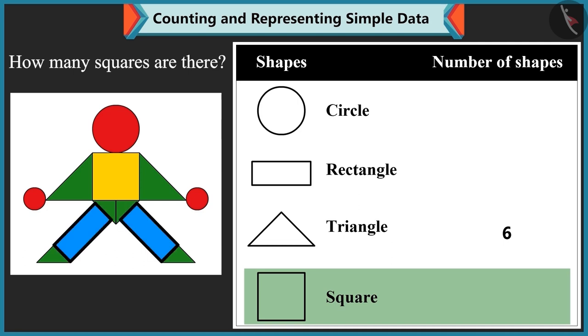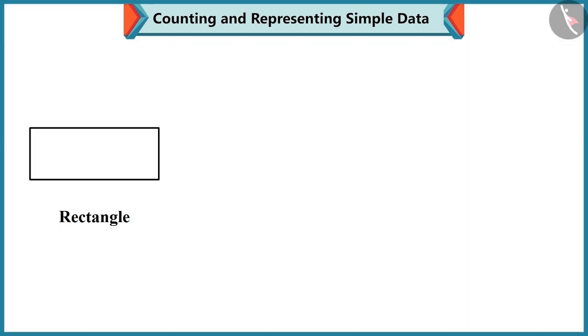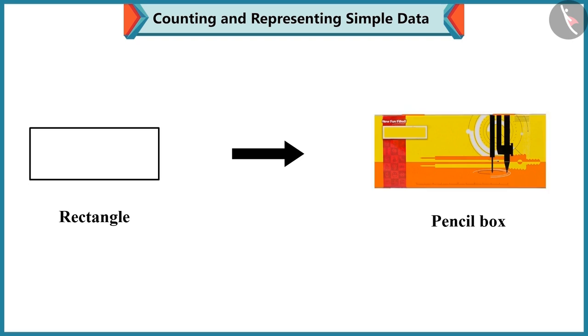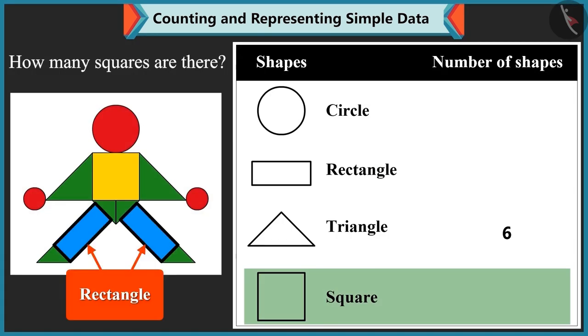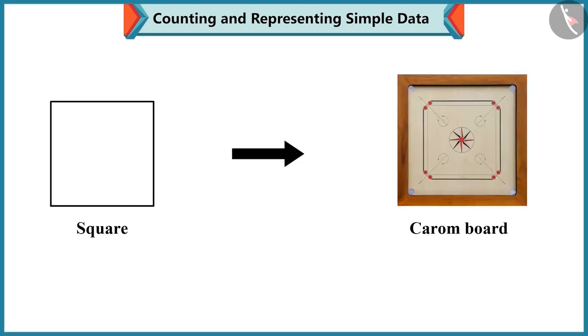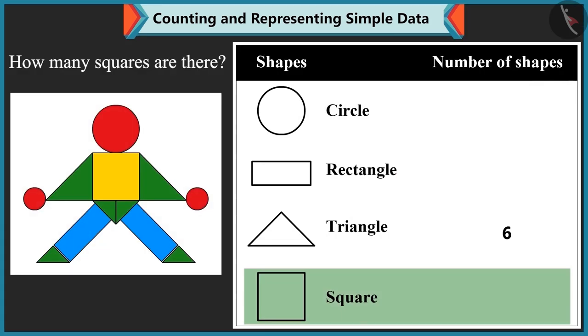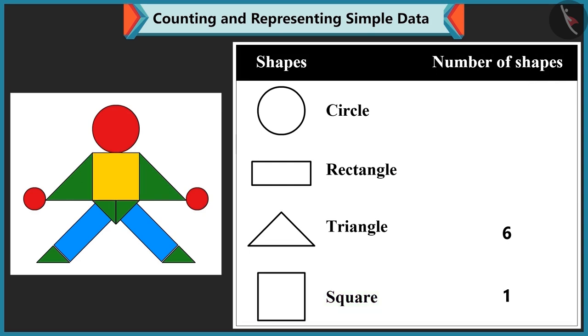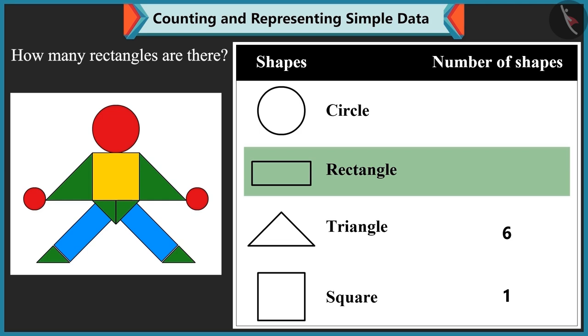Mummy, this is also a square, right? No, Bubbly. This is a rectangle. This shape is same as your pencil box. Ok, this is a rectangle. Yes, and the shape of the square is the same as your carom board. Ok, so there is only one square in this picture. Very good. Now tell me, how many rectangles are there?